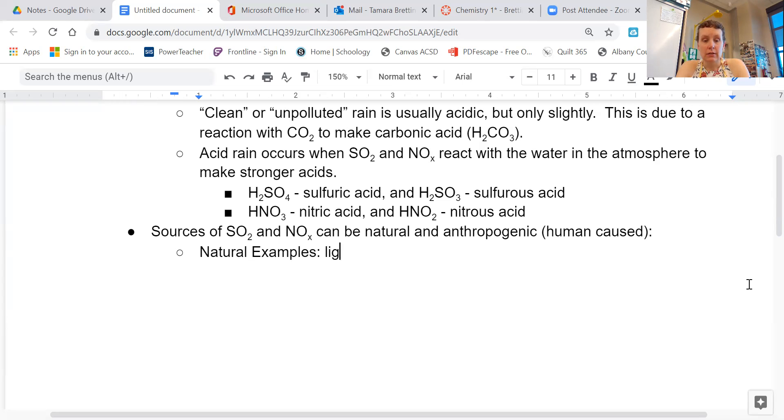Natural examples: Lightning. Lightning is a super high amount of energy and it causes the nitrogen in the air to react with the oxygen in the air and creates a little bit of NOx, nitrogen oxide compounds. And volcanoes can be a source of SO2.